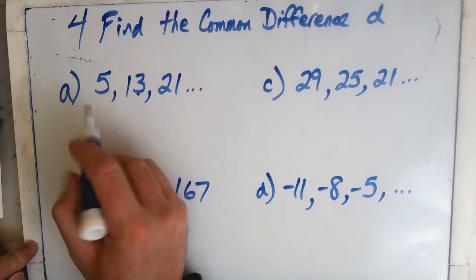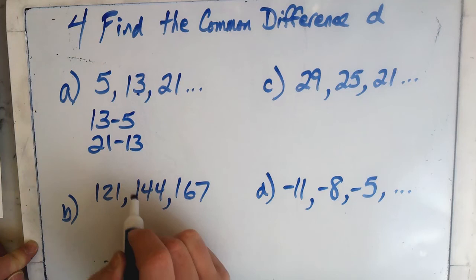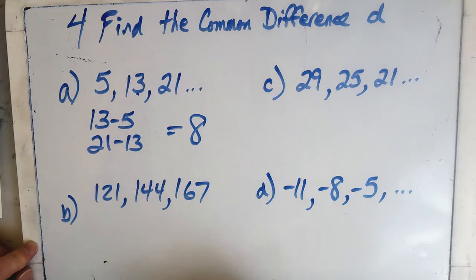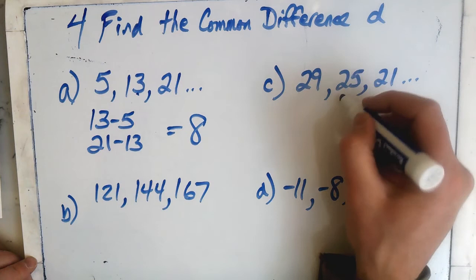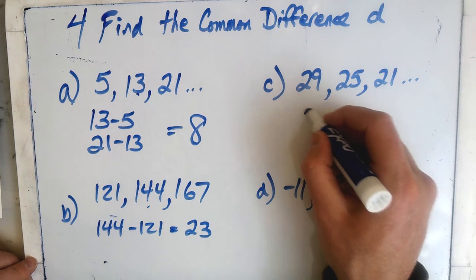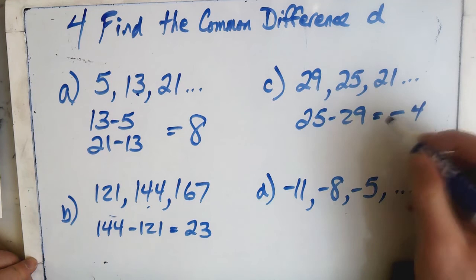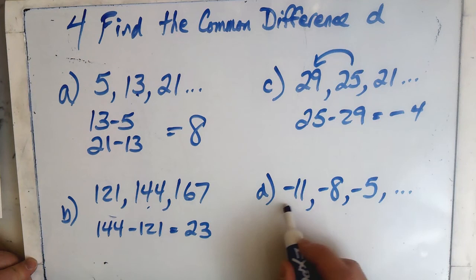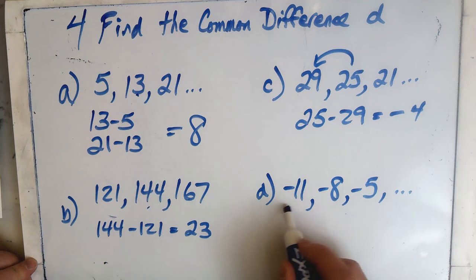For the last one, we need to find the common difference D — we always subtract consecutive terms. Take 13 minus 5, or 21 minus 13; as long as they're next to each other, we subtract the previous term and get the same answer, which is 8. For the next sequence, go 144 minus 121 — or 167 minus 144 — to get the common difference. If the sequence is going down, we should get a negative answer. The last one is tricky because it has negatives, so we have to subtract the previous term carefully.